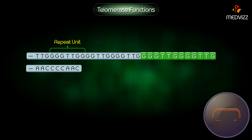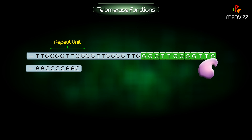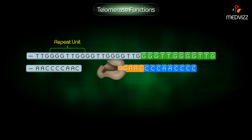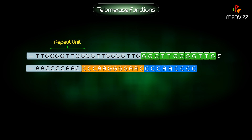Once telomerase has completed its function, DNA primase synthesizes an RNA primer near the 3' end and DNA polymerase fills in the vacant region. A short region at the 3' end will remain single-stranded. The end result is that telomerase will have added many repeat sequences — from a few dozen to a few hundred — preventing chromosome shortening.